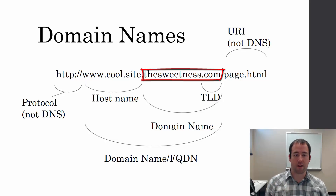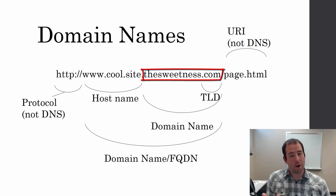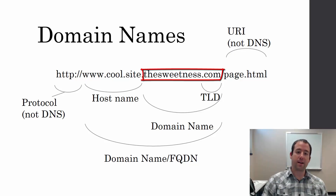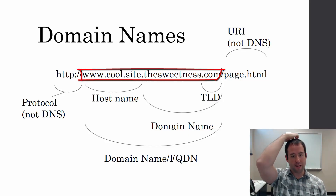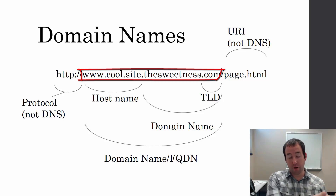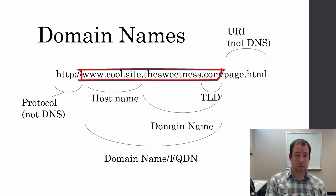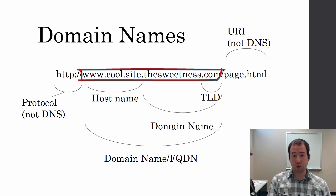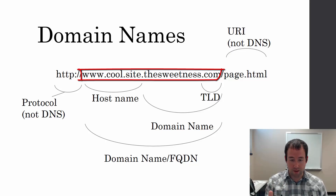Once I own thesweetness.com, I can do whatever I want before that. So here I have www.cool.site.thesweetness.com — that has a bunch of different names. It's a subdomain, and it's also the host name, referring to a specific machine. We'll talk about that when we discuss DNS resource records.